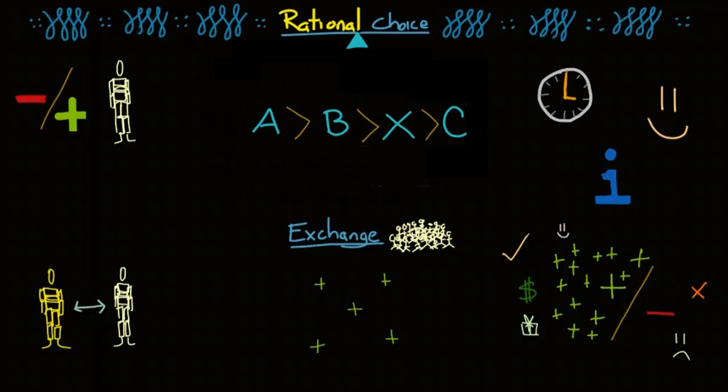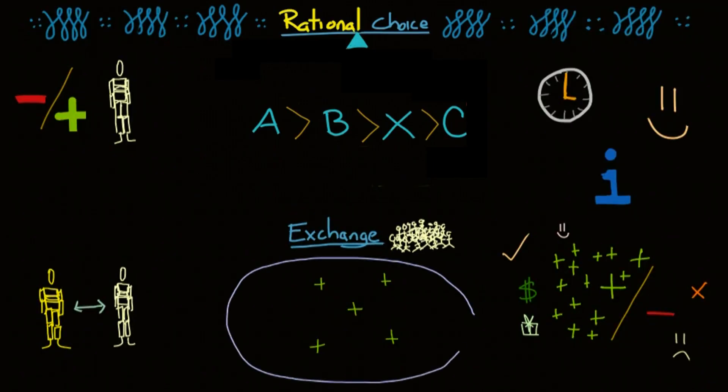Next, it is assumed that interactions operate within the social norms. Keeps our frame of reference manageable. And just like rational choice theory, exchange theory assumes that people have access to the information they need to make rational choices. That's probably debatable, but for the sake of this theory, it is assumed.